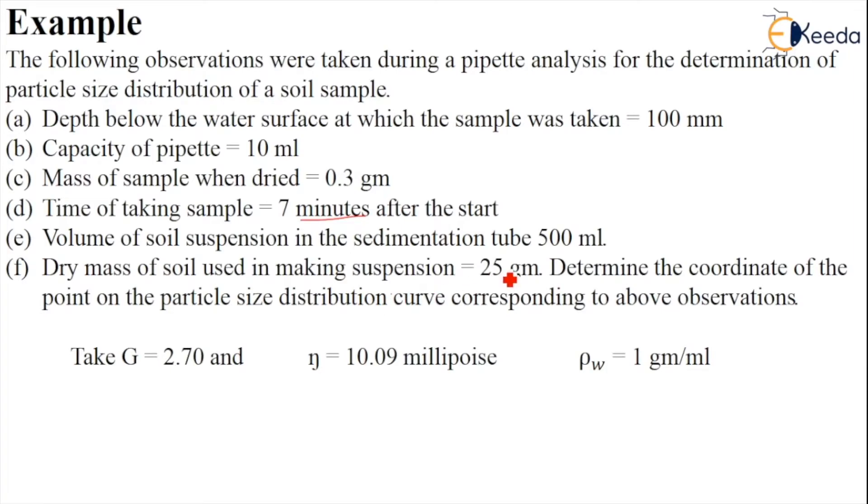We have to determine the coordinates of the point on the particle size distribution curve corresponding to the above observations. Also given: G is 2.7, η is 10.09 millipoise, and ρw is 1 gram per ml.